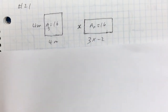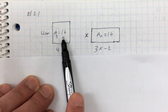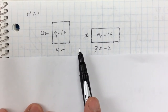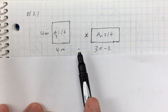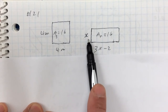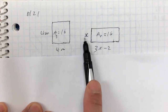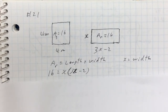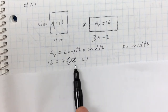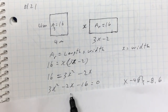Looking at the diagram: the square is 4 meters by 4 meters, so its area equals 16. The area of the rectangle also equals 16. The length of the rectangle is two meters less than three times the width. Let X be the width, so the length is 3X − 2. The area equation is X times (3X − 2) = 16.